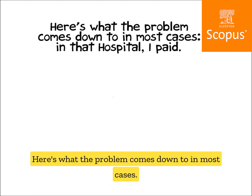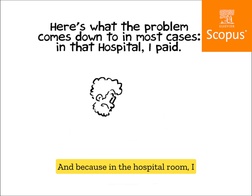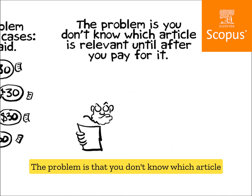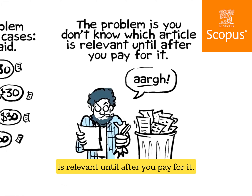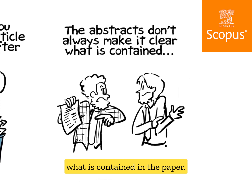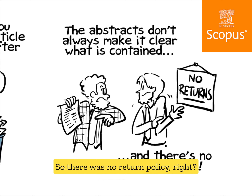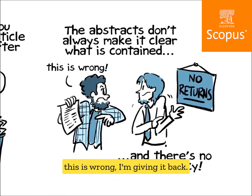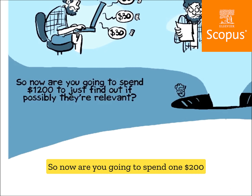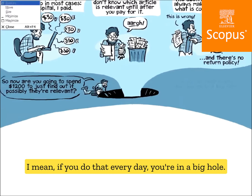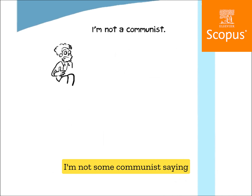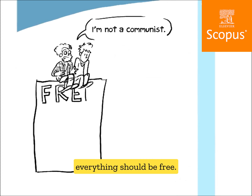In the hospital room, I bought dozens of articles. The problem is you don't know which article is relevant until after you pay for it — the abstracts don't always make it clear what's in the paper. There's no return policy; I couldn't buy it and then say this is wrong, I'm giving it back. So now are you going to spend $1,200 just to find out if articles are possibly relevant? If you do that every day, you're in a big hole.